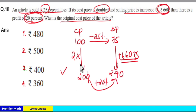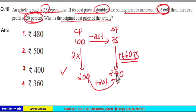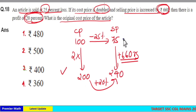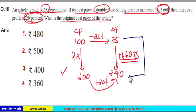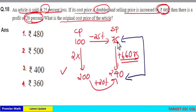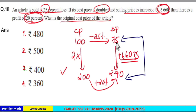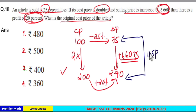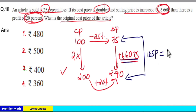The current cost price is 200 parts and the current selling price is 240 parts. The difference between the initial selling price and the current selling price is 240 parts minus 75 parts, which equals 165 parts.